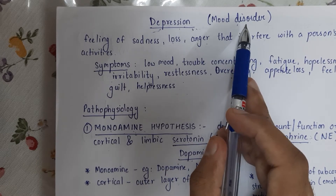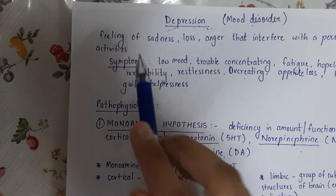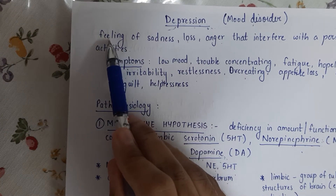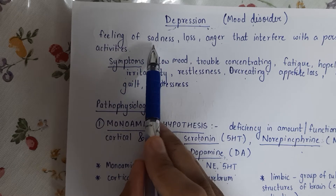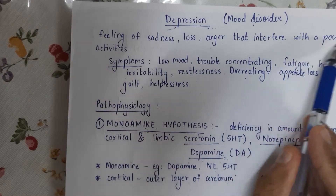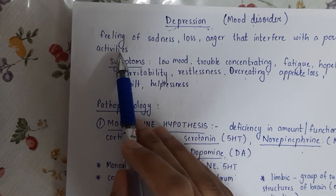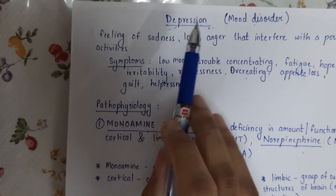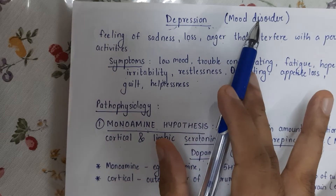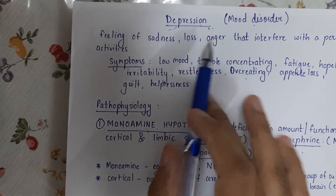Now let's move on to the definition of depression. Depression is defined as a persistent feeling of sadness, loss, anger that interferes with a person's everyday activities. The person will be feeling very sad, very low, and will lack motivation for doing many things.